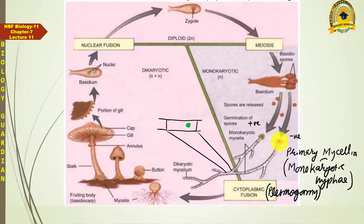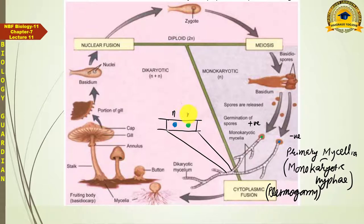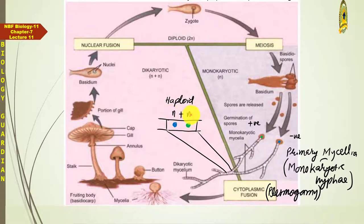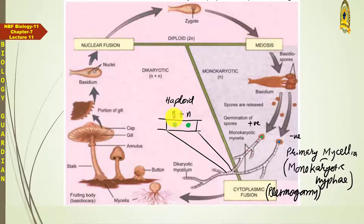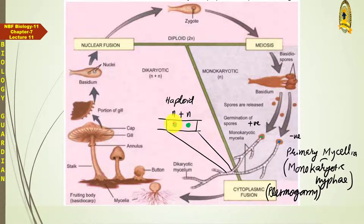One nucleus belonged to one spore and the other to the second spore's mycelium. These two genetically different nuclei are now together. Remember that both nuclei are haploid — their chromosome number is n. So this cell is n+n. It is not called diploid because diploid requires two sets of chromosomes within one nucleus; each nucleus here has a single set, so both are haploid.